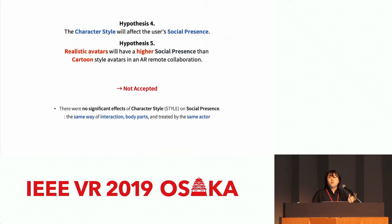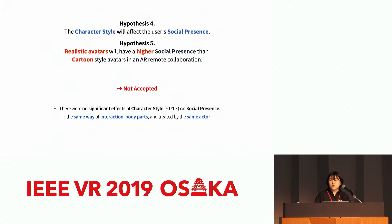Hypotheses four and five were not supported, as there were no significant effects of character style. In our research, all participants were exposed to the same partner controlling the avatar's personality and social behavior. We also assumed that the social presence questionnaire asked indirectly about communicating factors such as attention, interaction, and mutual understanding. Therefore, both styles having the same mode of interaction, body parts, and treatment by the actor could explain this result.